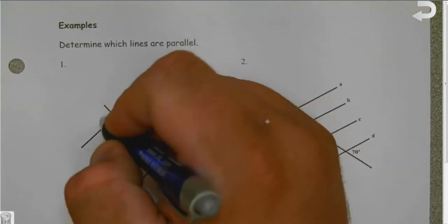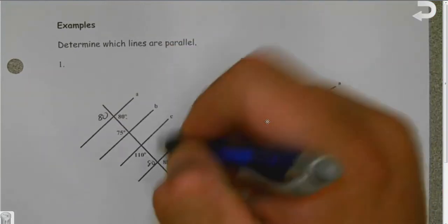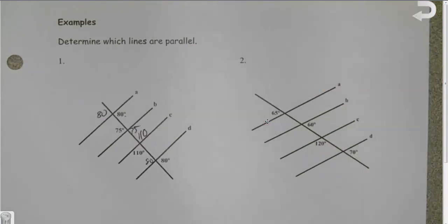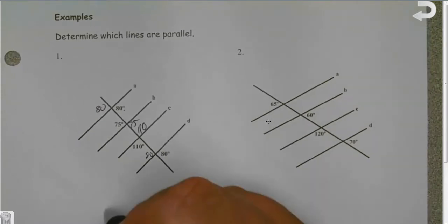If this one's 80, this one's 80, 80, 110, 75. Now that might not always give us enough information. This time it does because we can now tell by looking that A is parallel to D.